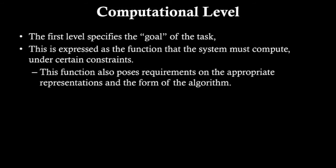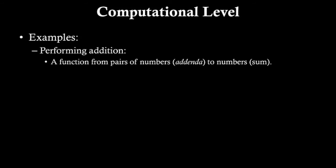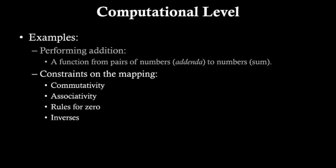Just talking about addition. Performing addition, what is computational level analysis of a machine? If it's performing addition, then at least it's performing a function from pairs of numbers (addends) to numbers (sum). To each pair of numbers, it corresponds at most one number. But not just any function from pairs of numbers to numbers does the job. You have some constraints that the nature of addition is going to impart, such as the requirement of commutativity, associativity, rules for zero, rule of inverses, etc.